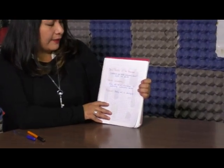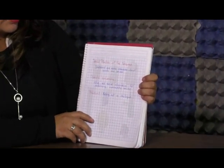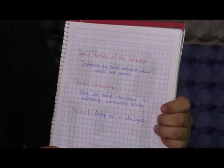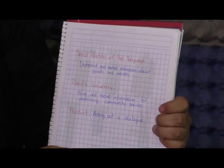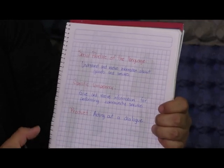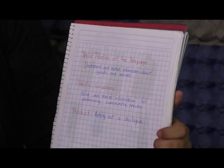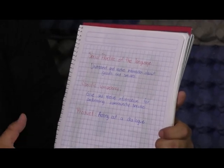También comenzamos lo que era con el programa, comenzamos la primera unidad, en donde la práctica social del lenguaje era entender y recibir información acerca de bienes y servicios. La competencia específica era dar información y recibir información para realizar un servicio comunitario. Nuestro producto o proyecto final era actuar un diálogo. Vamos a continuar trabajando con esto.